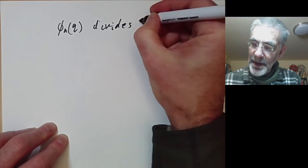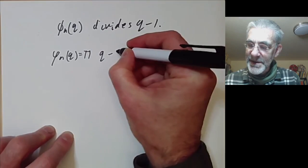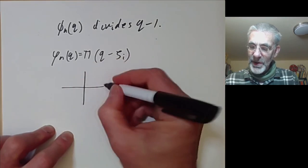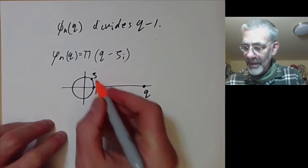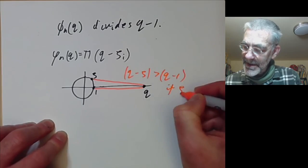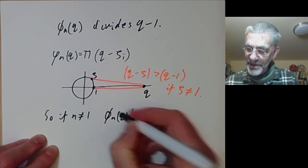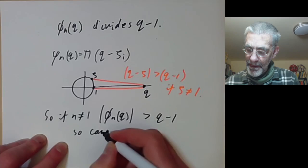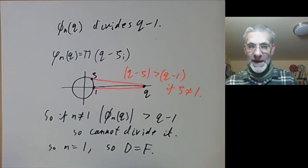We know that phi n of q divides q minus 1. Well, this easily implies n equals 1. And that's because phi n of q is just a product of q minus various nth roots of unity. And if you plot the roots of unity, here's q and here's 1 and here's zeta. And you notice immediately that this distance q minus zeta is bigger than q minus 1 if zeta is not equal to 1. So if n is not equal to 1, phi n of q has absolute value bigger than q minus 1, so cannot divide it. So n equals 1, so the division algebra D is actually equal to its center F and is therefore commutative.